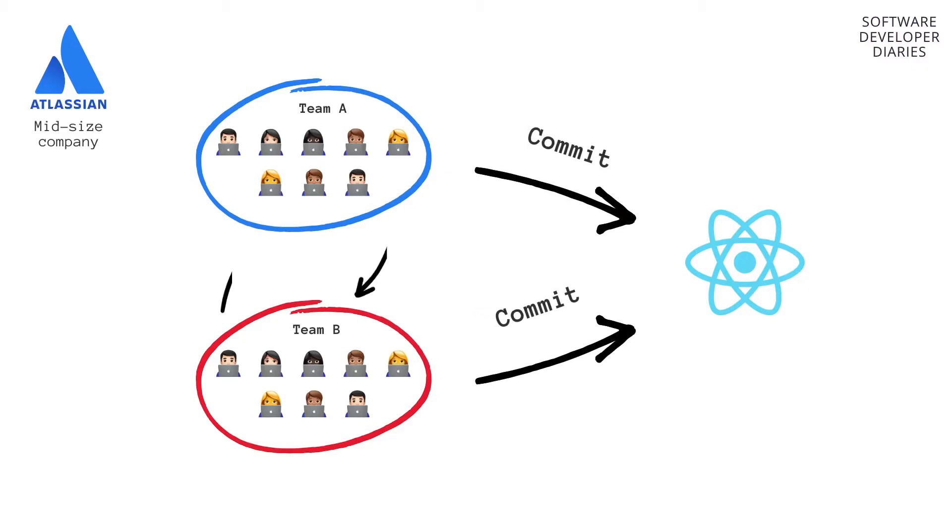One of the main issues is dependency on each other. If two teams are working on the same app and one team wants to release their feature, this is going to be really hard. You need to make sure that the other team is also ready to release and doesn't have any work in progress. Otherwise, you simply cannot split your React application into two and release them separately, because it's a monolithic application that comes out as one.